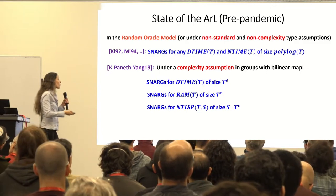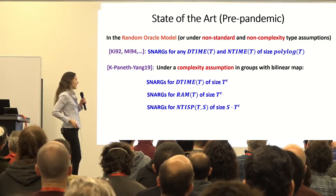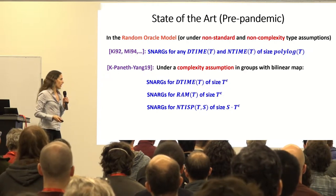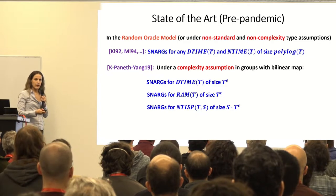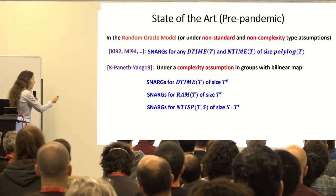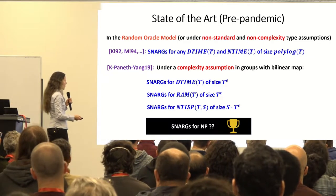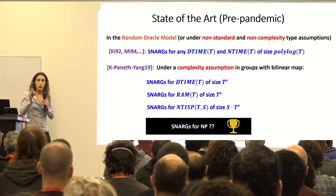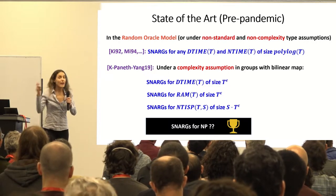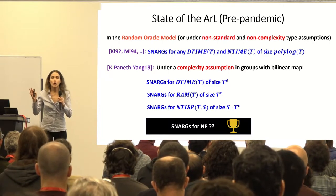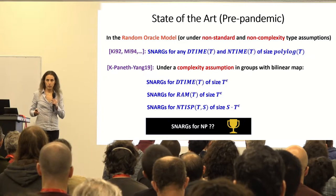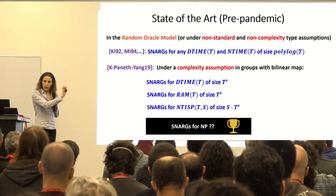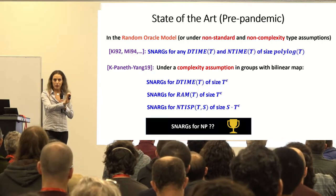We also did it for subclasses of NP, for example NTISP — non-deterministic time-T space-S computations. But we still don't have SNARGs for NP under standard assumptions with some succinctness. This was the state pre-pandemic.